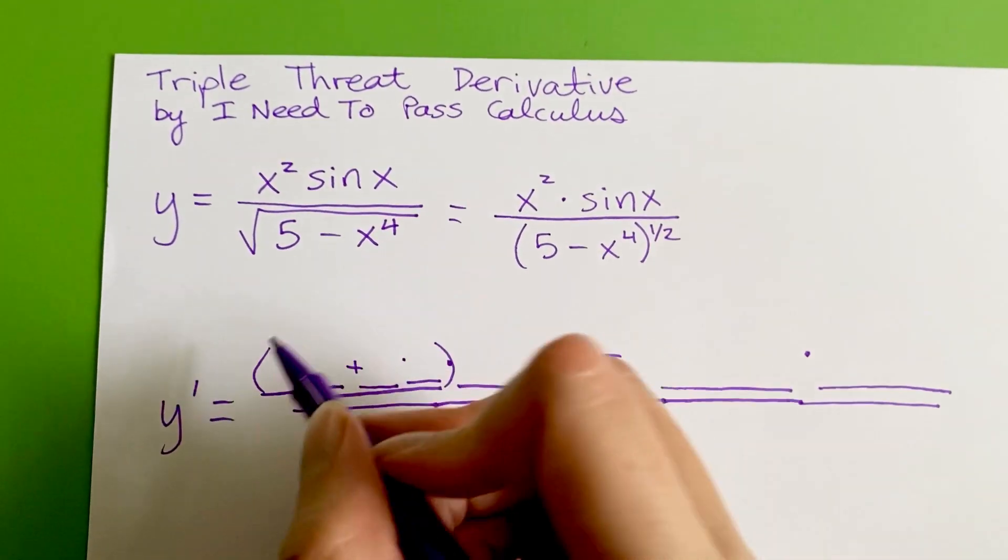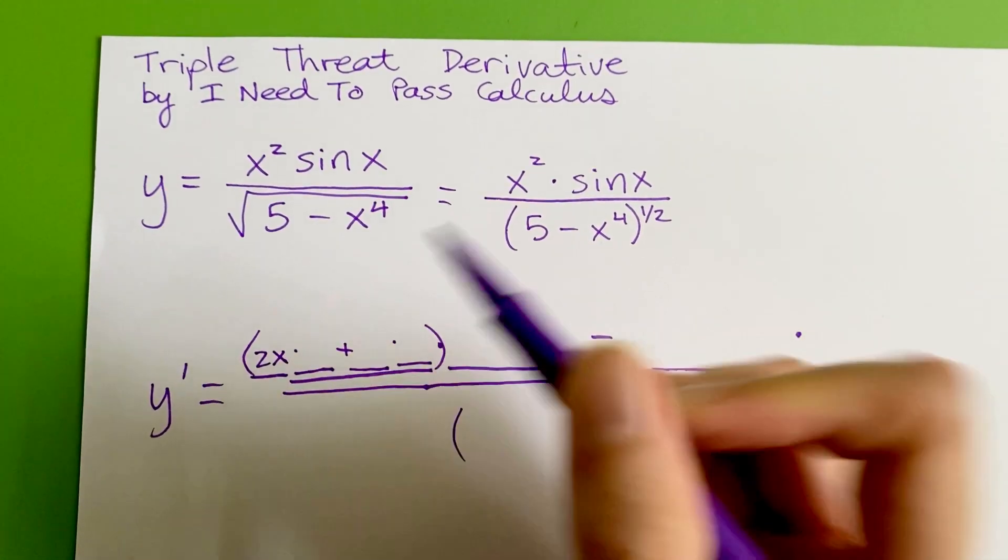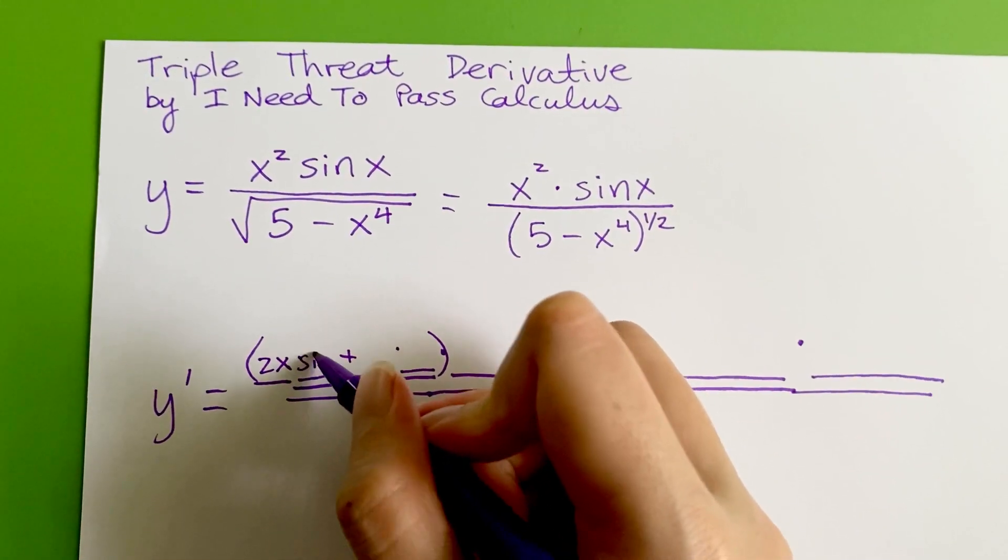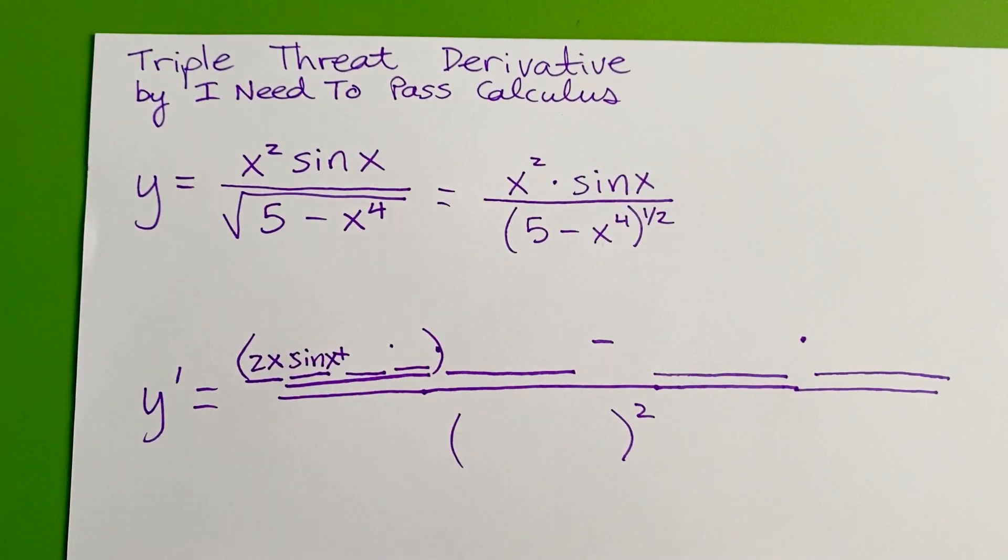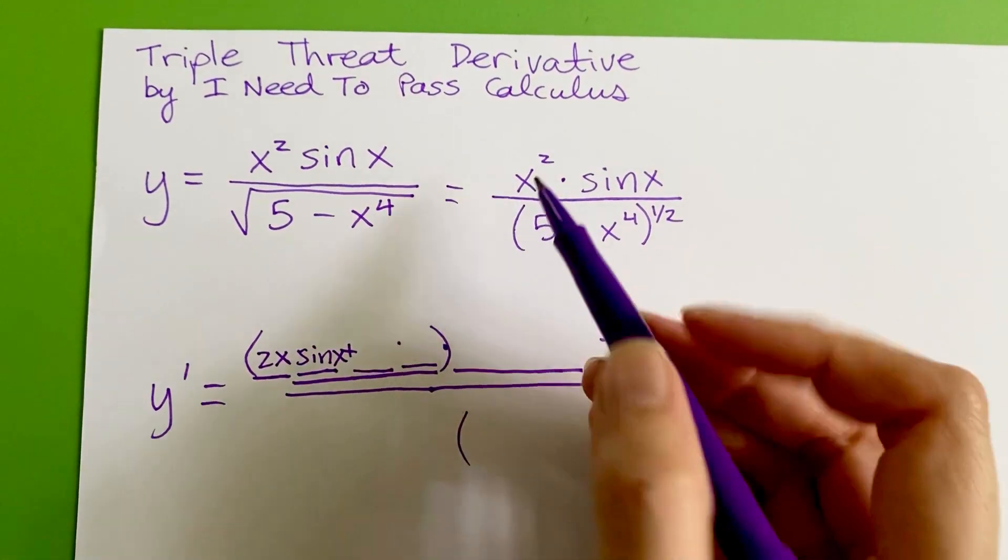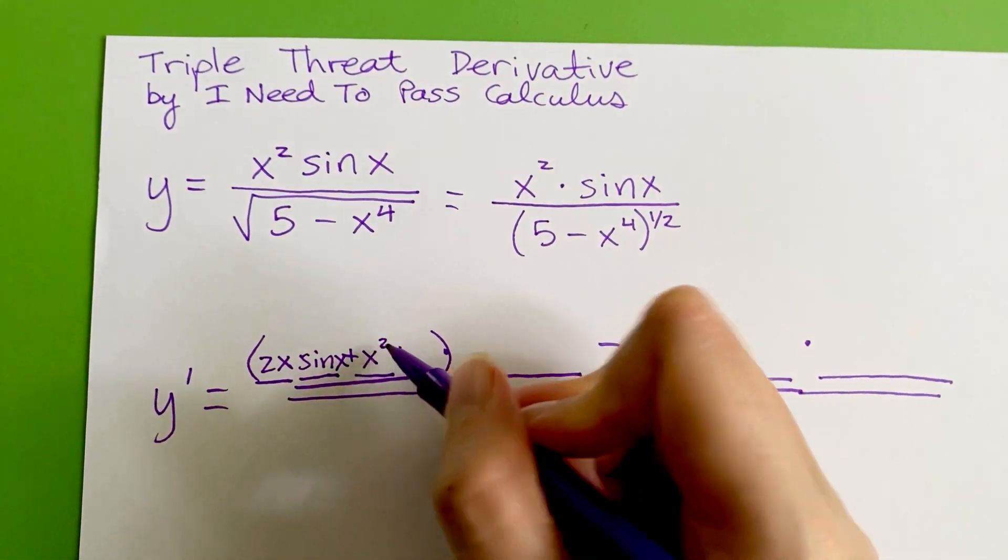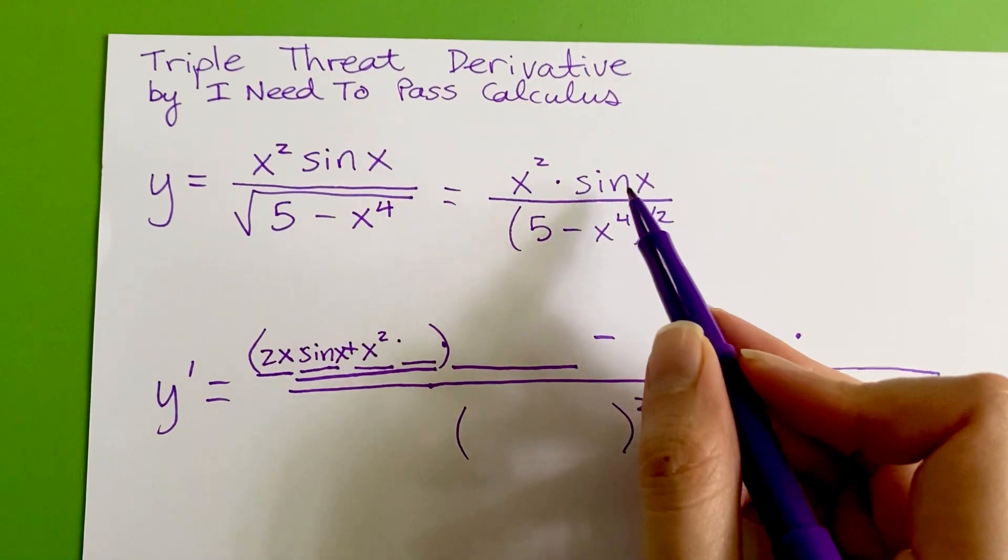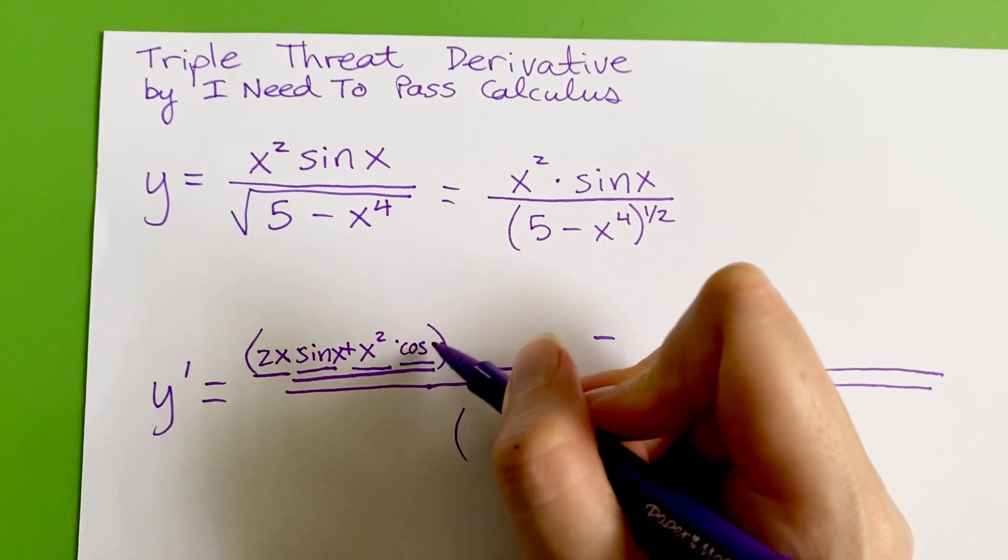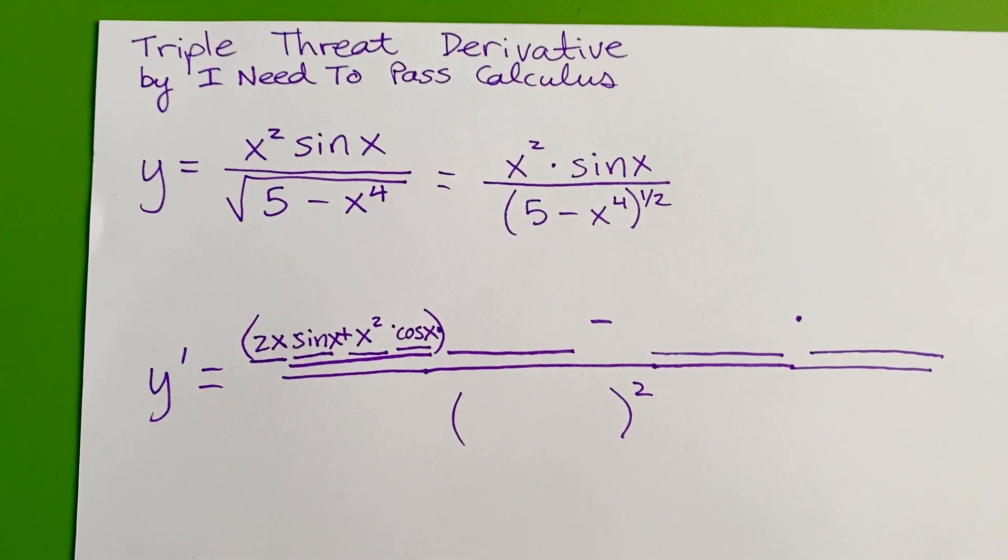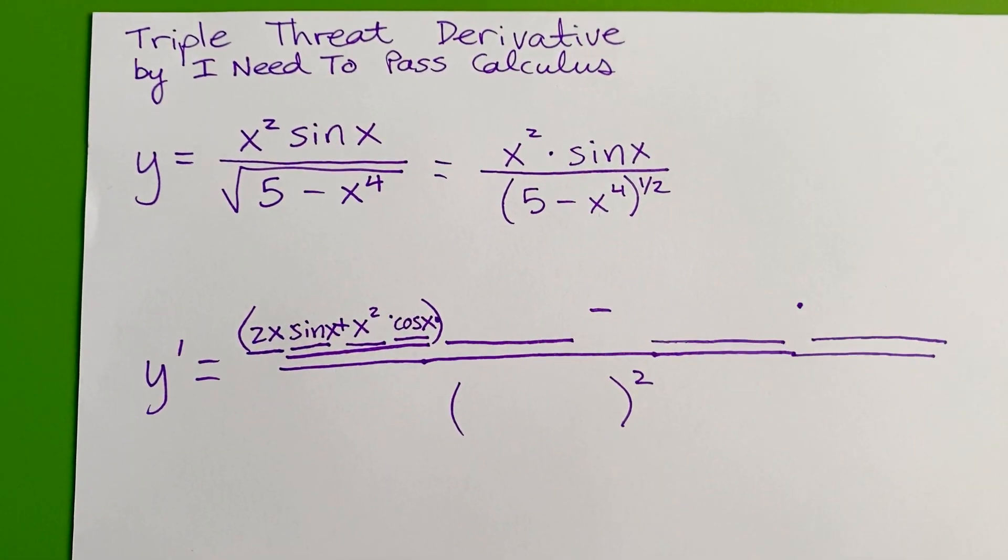Well, the first part's derivative is 2x. Second part stays unchanged, times sine x. Plus the first part unchanged, x squared, times the second part's derivative, so times cosine x. All right, so there's our first part of the quotient rule.